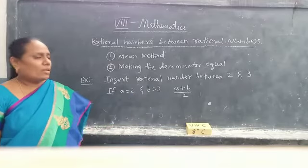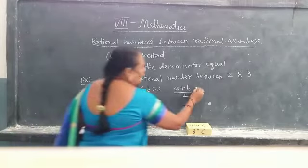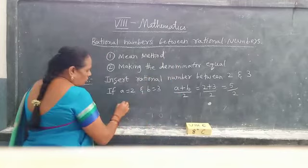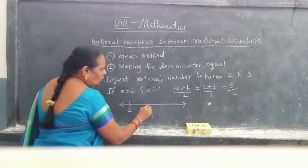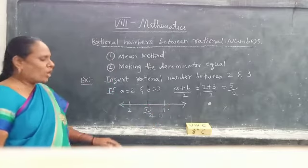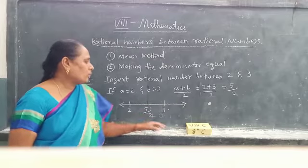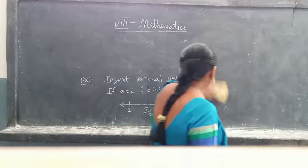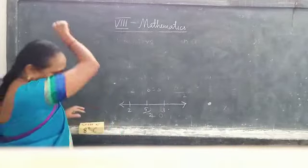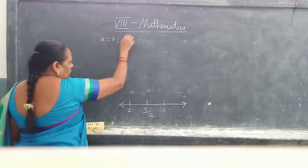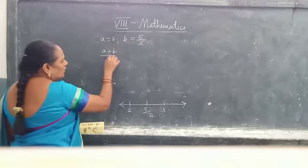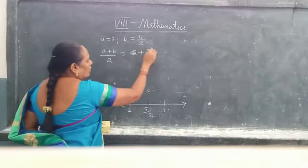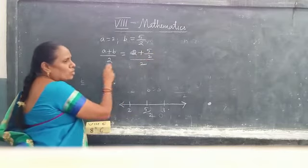So what will you get here? This is 2 plus 3 by 2, which equals 5 by 2. On the number line: 2, then 5 by 2, then 3. Again, if you want to insert a rational number between 2 and 5 by 2, use the mean method: A plus B by 2, where A equals 2 and B equals 5 by 2.